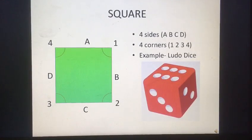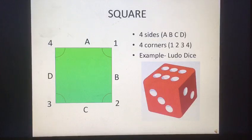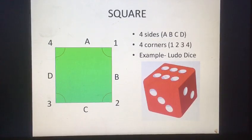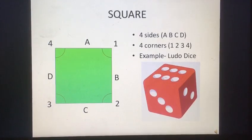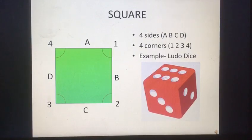Square. It has four sides — A, B, C, D — and four corners: one, two, three, four. Example: ludo dice.